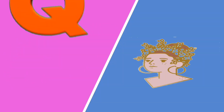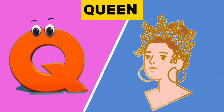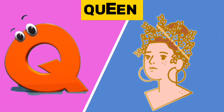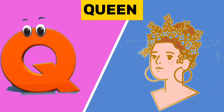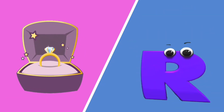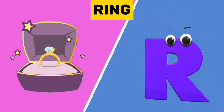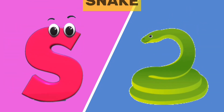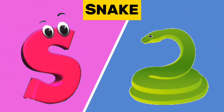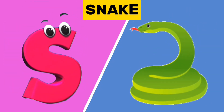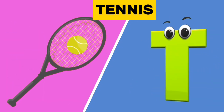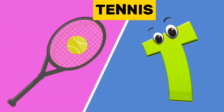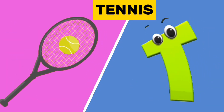Q is for queen. Qu, qu, queen. R is for ring. R, r, ring. S is for snake. S, s, snake. T is for tennis. T, t, tennis.